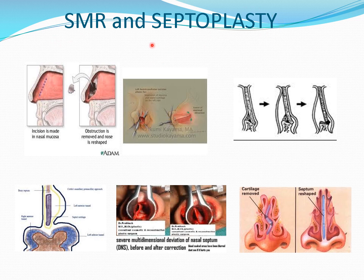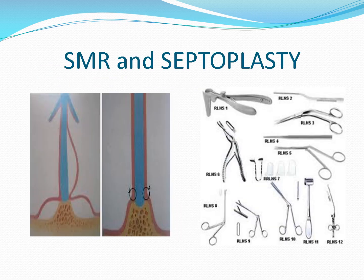There are certain differences between SMR and septoplasty. In septoplasty, a Freer incision is given at the anterior caudal margin at the mucocutaneous junction and the flap is raised on one side — mucoperichondrial and mucoperiosteal flaps are raised. Then the cartilage is separated from the maxillary crest and we go to the opposite side to raise the mucoperiosteal flap. The spur is removed and the deflected part of the nasal septum is removed, and the septum is stretched to the nasal spine. In septoplasty, both sides of mucoperichondrium are raised only when really necessary.